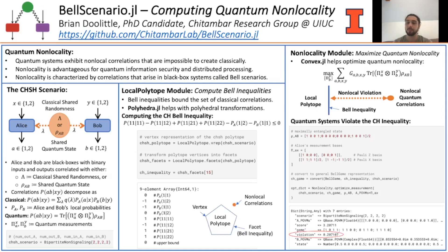In the code example, we show how to find Bob's optimally nonlocal measurement when Alice's measurement and the initial quantum state are fixed. The positive boundary quality violation in the output indicates that the correlations are indeed nonlocal. Thank you for visiting this poster and enjoy your time at JuliaCon.